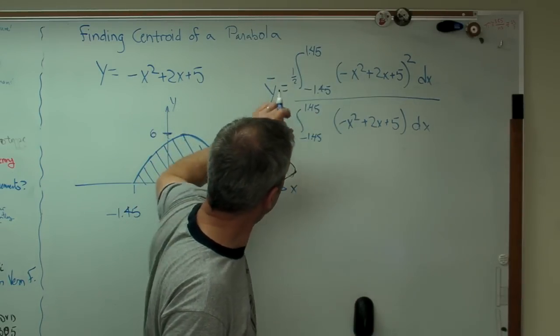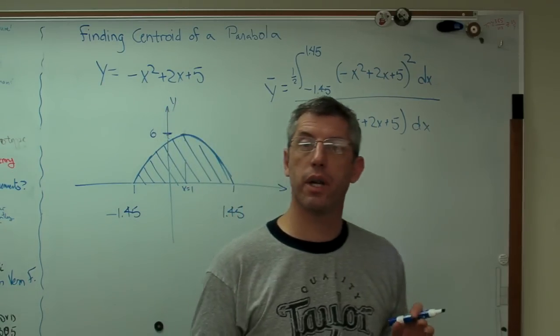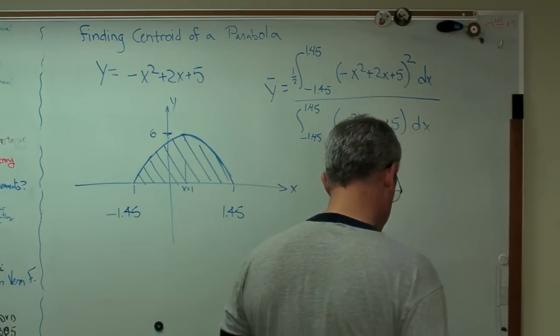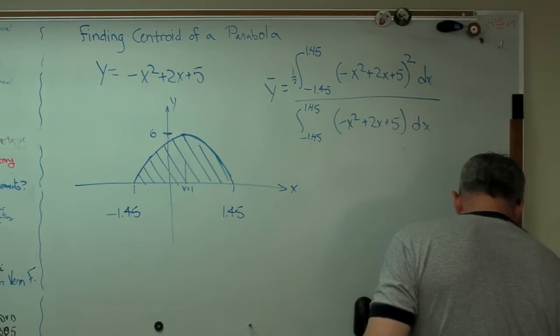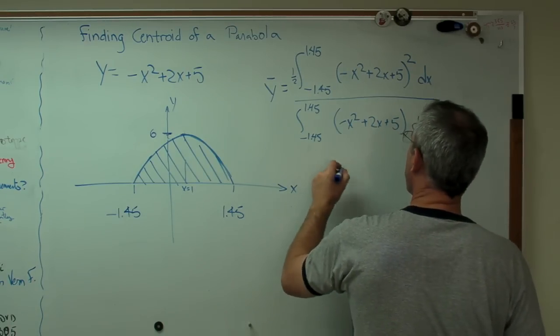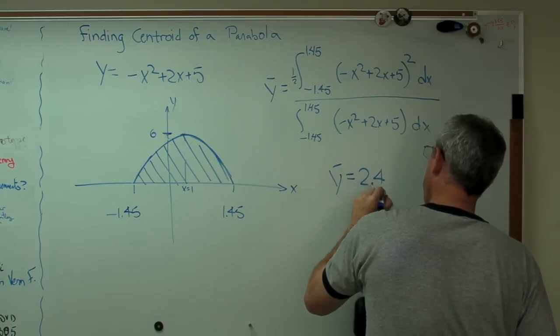There's my moment. There's my area. I'm doing just the exact same thing. The only difference now is that I'm using a slightly different function of y. So if you want to work that out, you get y bar equals 2.4.